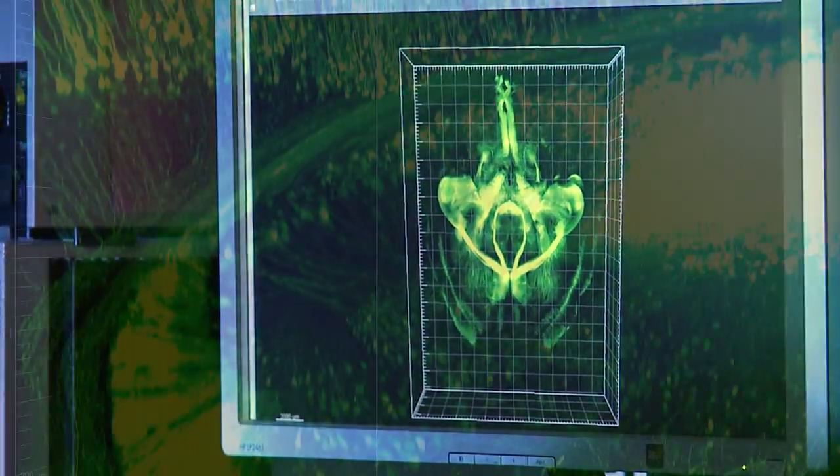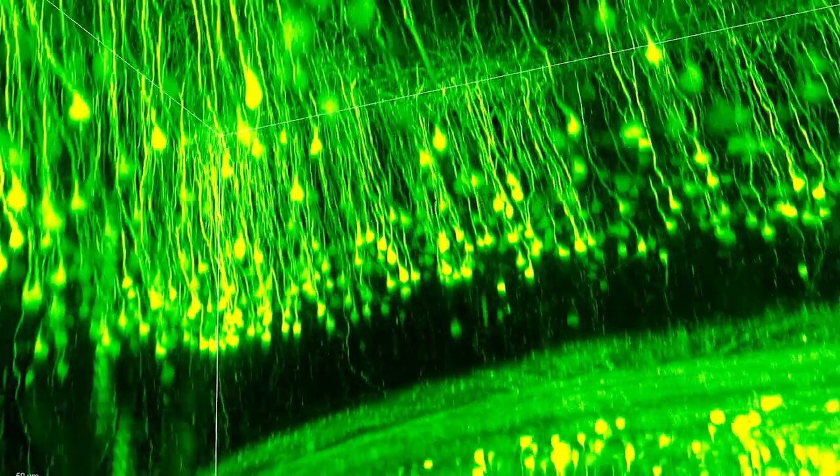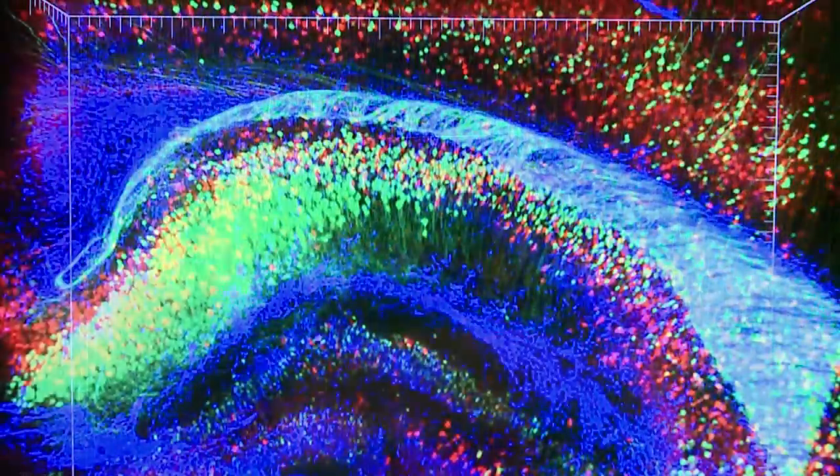So this is a whole mouse brain, and we're going to fly in and look around. And where you see groups of greenish-yellow spheres, those are individual neurons, and you can see how they're all arranged relative to each other.